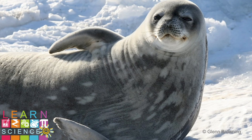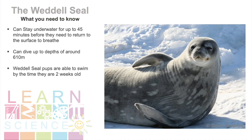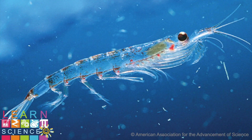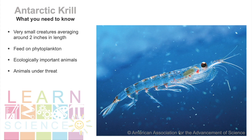Here we have a Weddell seal. These animals can spend as long as 45 minutes underwater before coming back up to the surface to breathe. They can also dive down to depths of around 610 metres. Interestingly, seal pups are also able to swim by the time they are two weeks old. Next, we have krill. Krill, in general, are quite small creatures, averaging around 2 inches in length. Antarctic krill are actually the largest of the krill species. They eat phytoplankton, which are microscopic, single-celled plants that live near the surface of the water. Krill are of much ecological importance in the Antarctic ecosystem, as they are the main staple in hundreds of other animal diets, including fish, birds and whales.